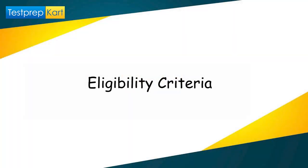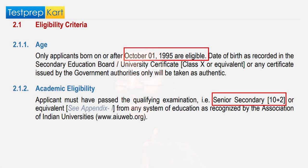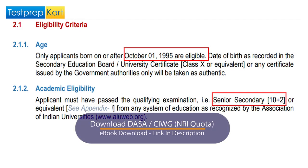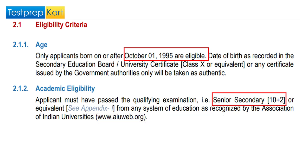Regarding eligibility criteria, there are two aspects: age and academic eligibility. For age, only applicants born on or after 1st October 1995 are eligible. They are required to have a secondary board education certificate — Class 10 or equivalent — or any certificate issued by a government authority as an authentic birth certificate.